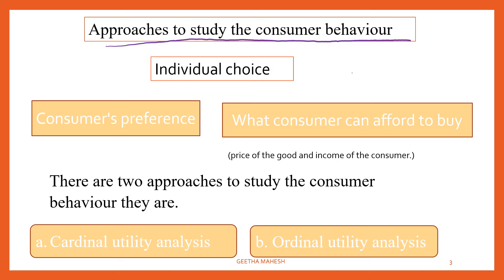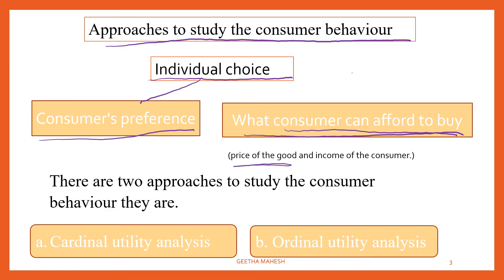Here we understand how a consumer is going to spend his limited income on different goods and services. Economists call this as a problem of choice. Every individual has to make a choice because he has to satisfy his unlimited wants with limited resources. Individual choice mainly depends on two things: one is the consumer's preference, and another is what the consumer can afford to buy, which depends on the price of the good and income of the consumer.